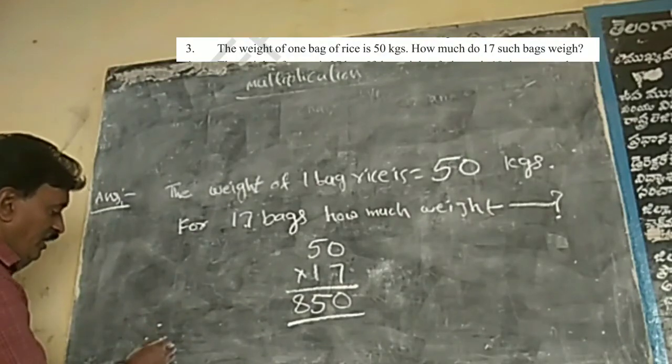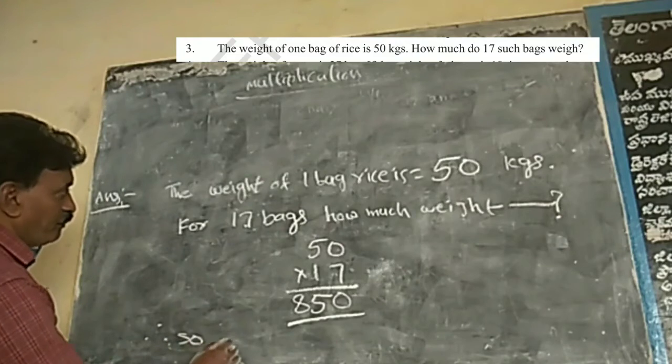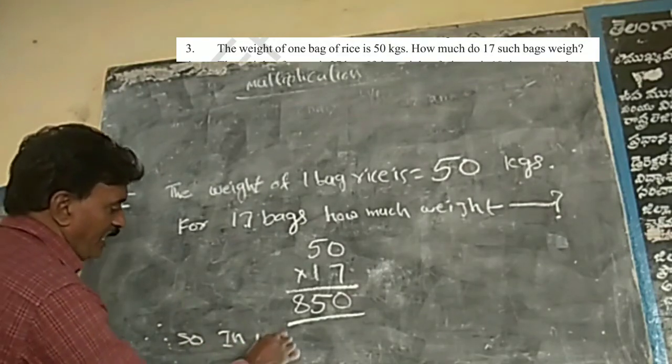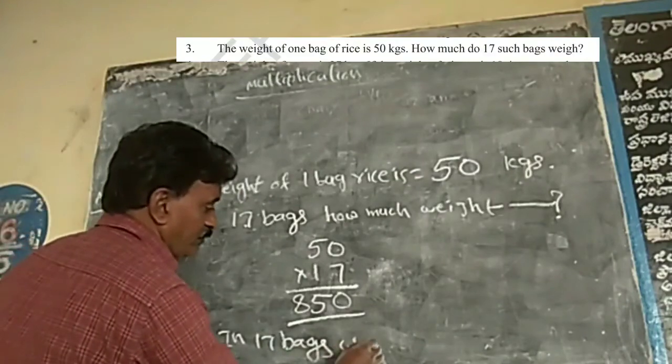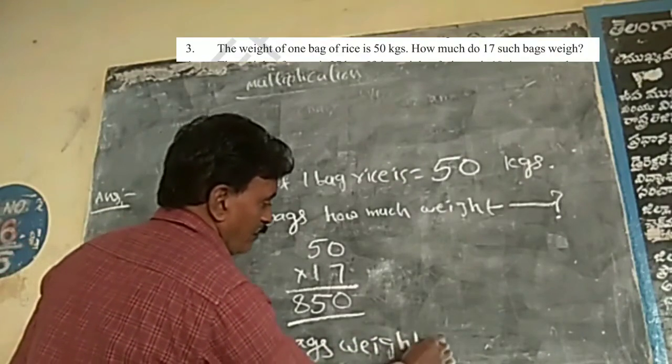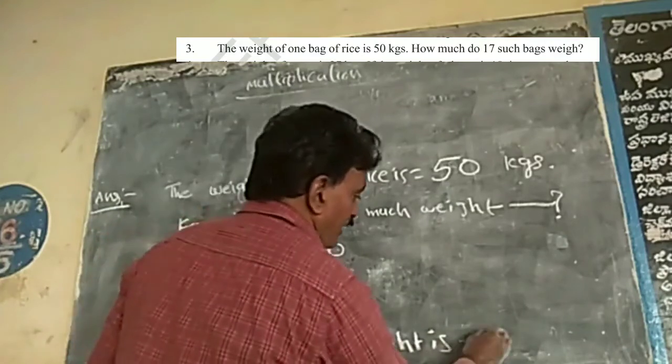The answer is in 4. So in 17 bags, weight is 850 kgs, kilogram.